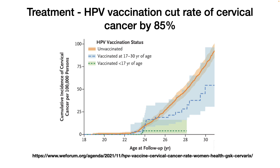Does it work? Yes. The HPV vaccine has cut the rate of cervical cancer by 85%, and this is what this graph shows. Looking at the age at diagnosis of cervical cancer, you can see that children vaccinated at less than 17 years of age show almost no incidence of cervical cancer. Those vaccinated between ages 17 to 30 show some increase, but then it levels off and decreases. In the unvaccinated, you see much higher incidences. So clearly this vaccine is protective and it's something that you should do.